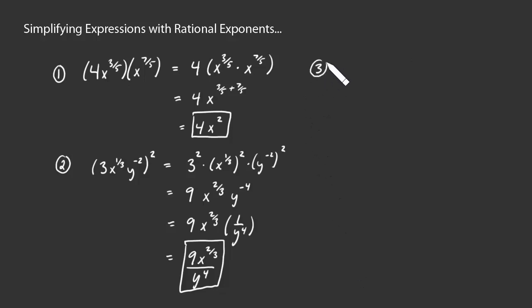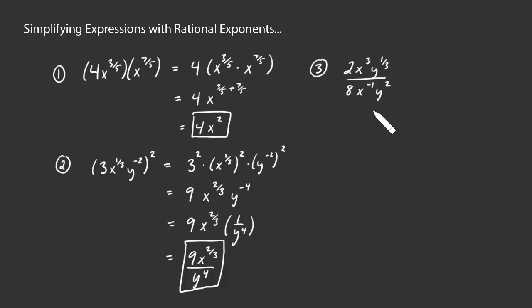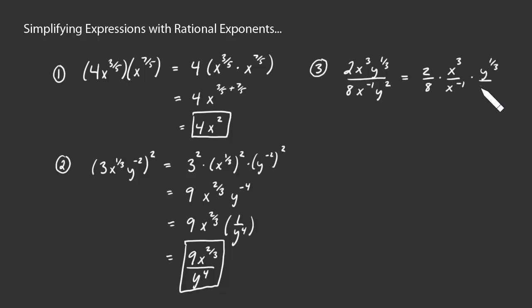Now let's take a look at a third example — this one will be a quotient. We have 2x to the third times y to the 1 third, all over 8 times x to the negative 1 times y squared. This is identical to the product of the fractions 2 eighths, times x to the third over x to the negative 1, times y to the 1 third over y squared — multiplying fractions by multiplying across the top and bottom.